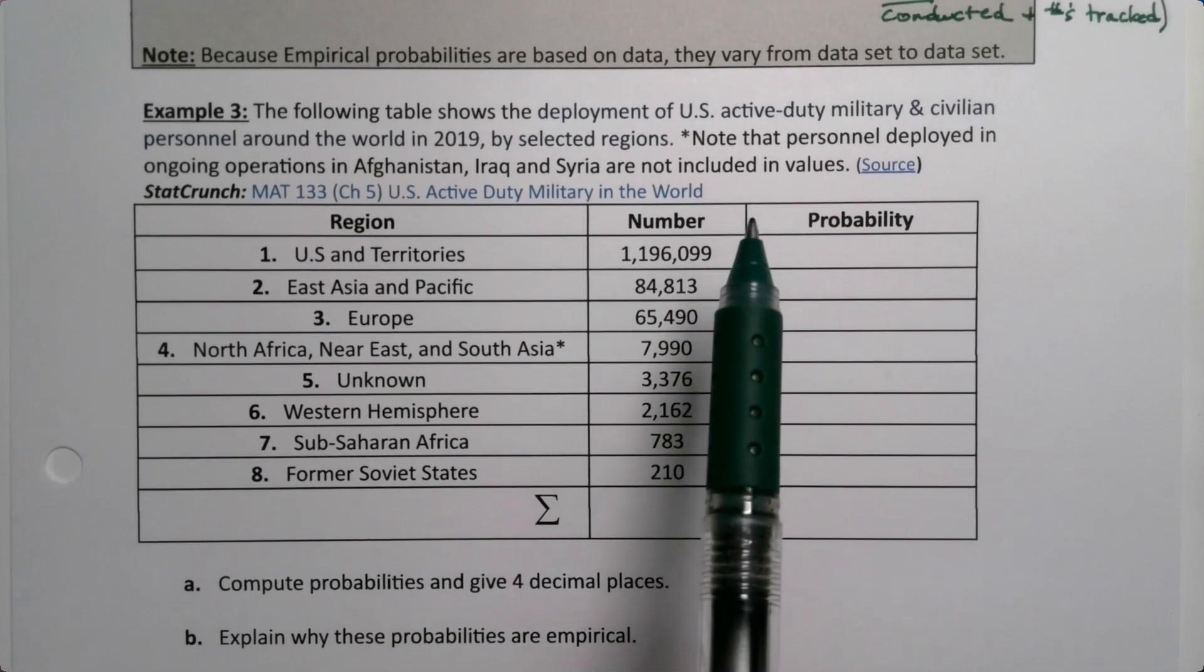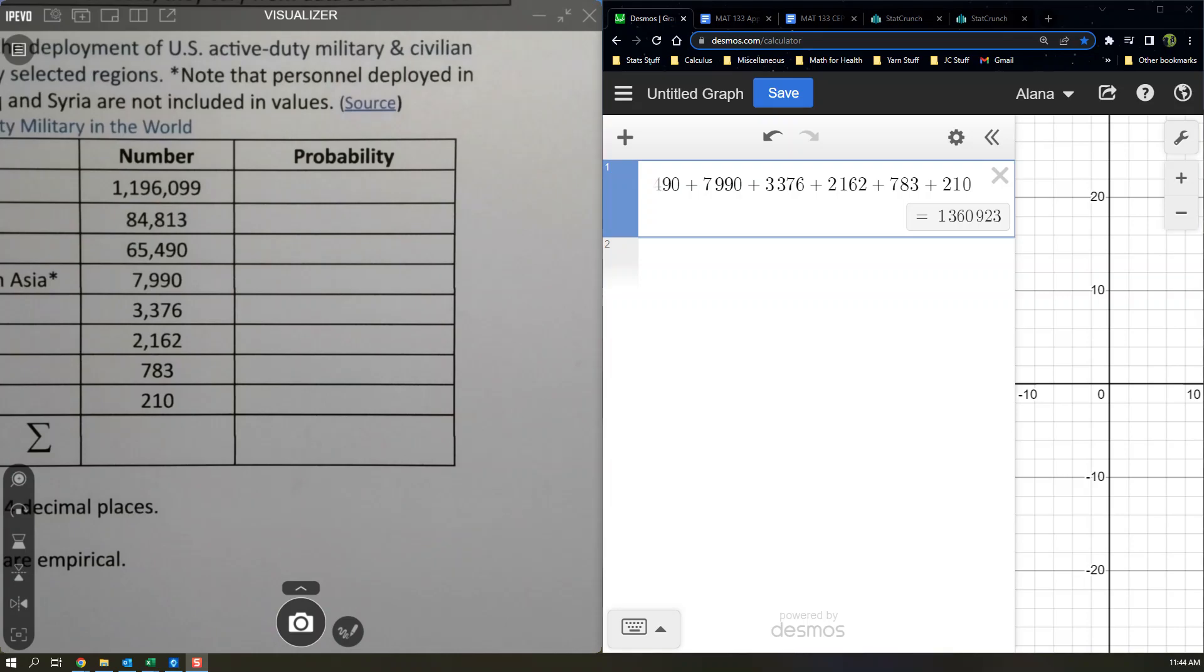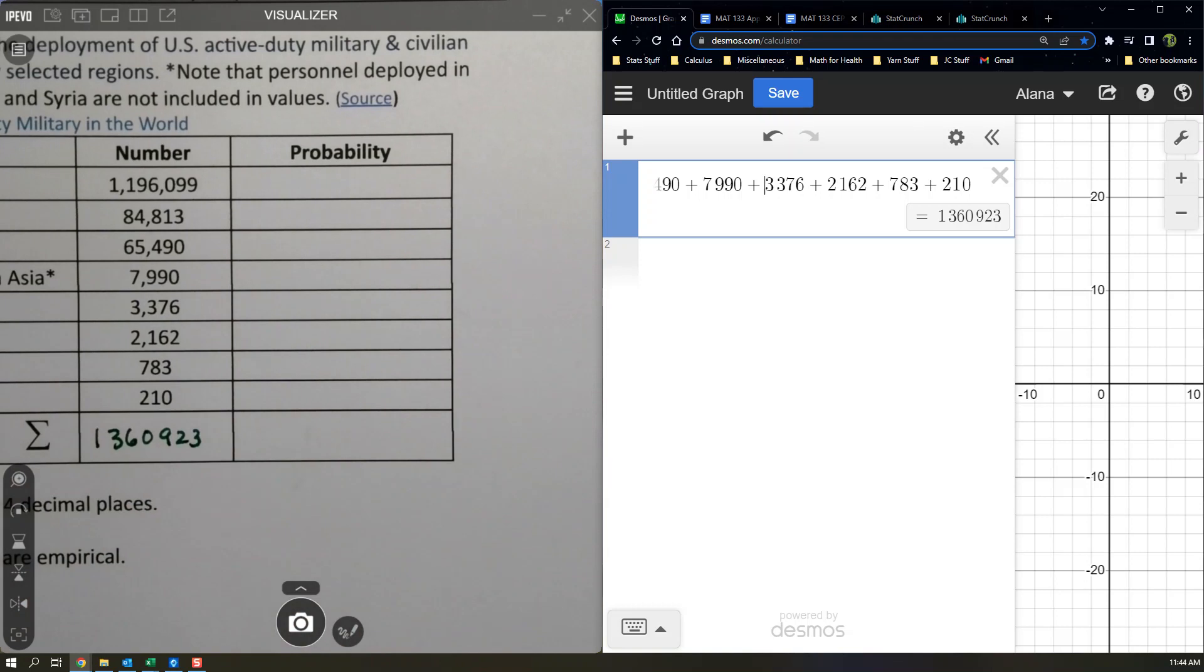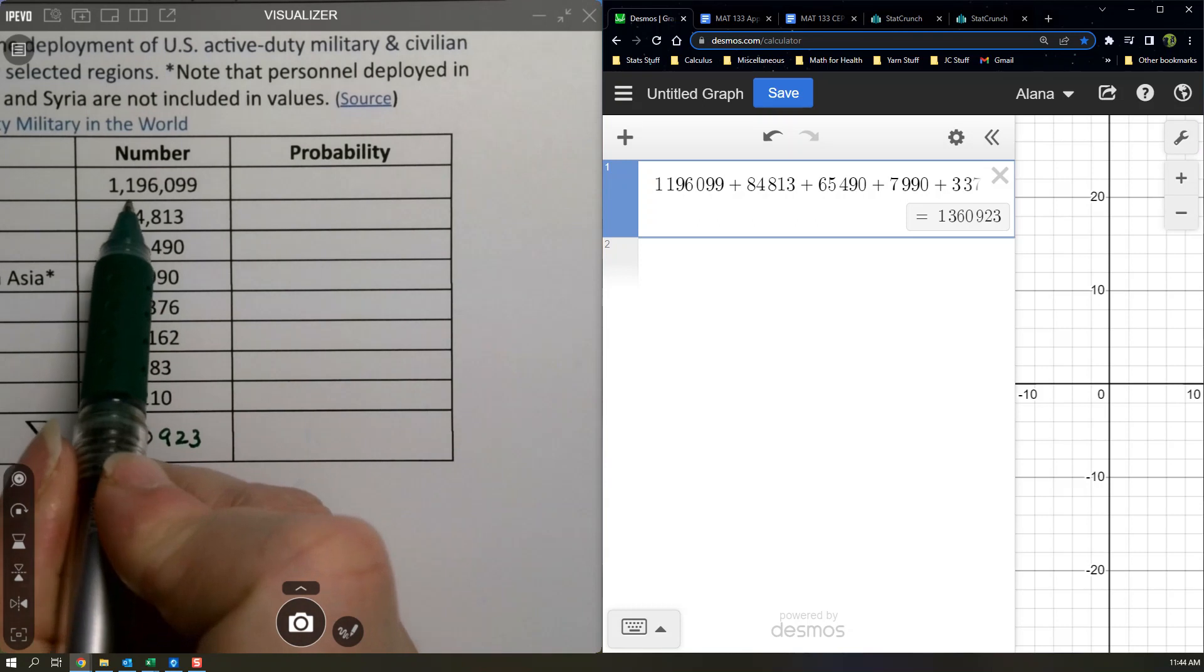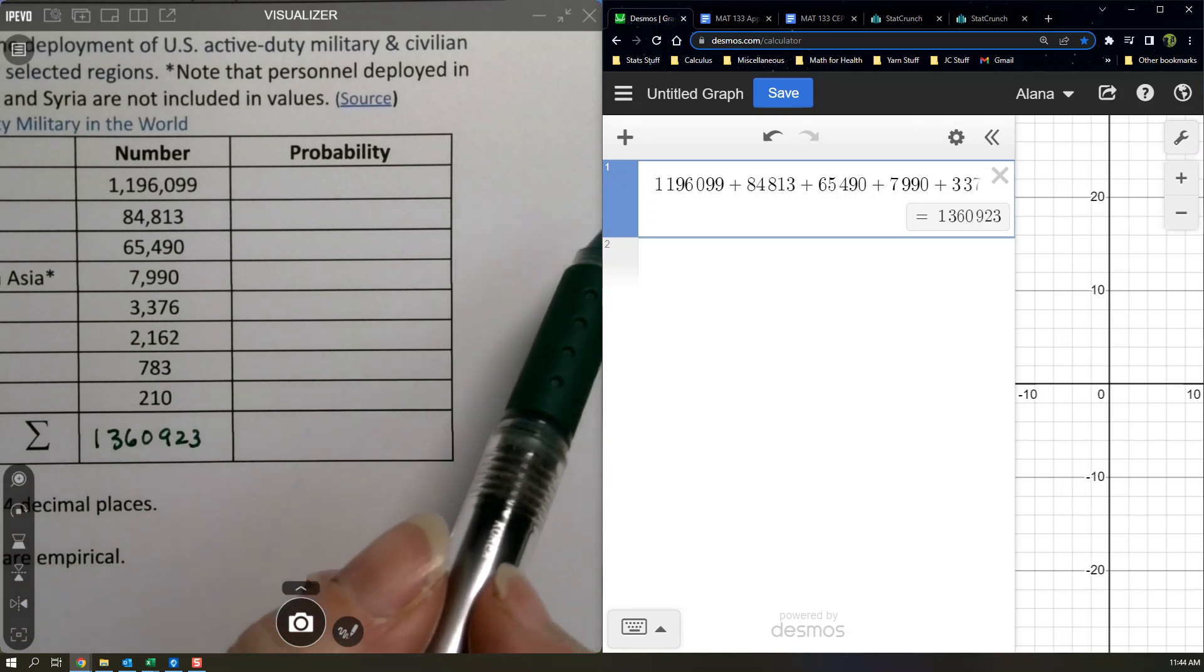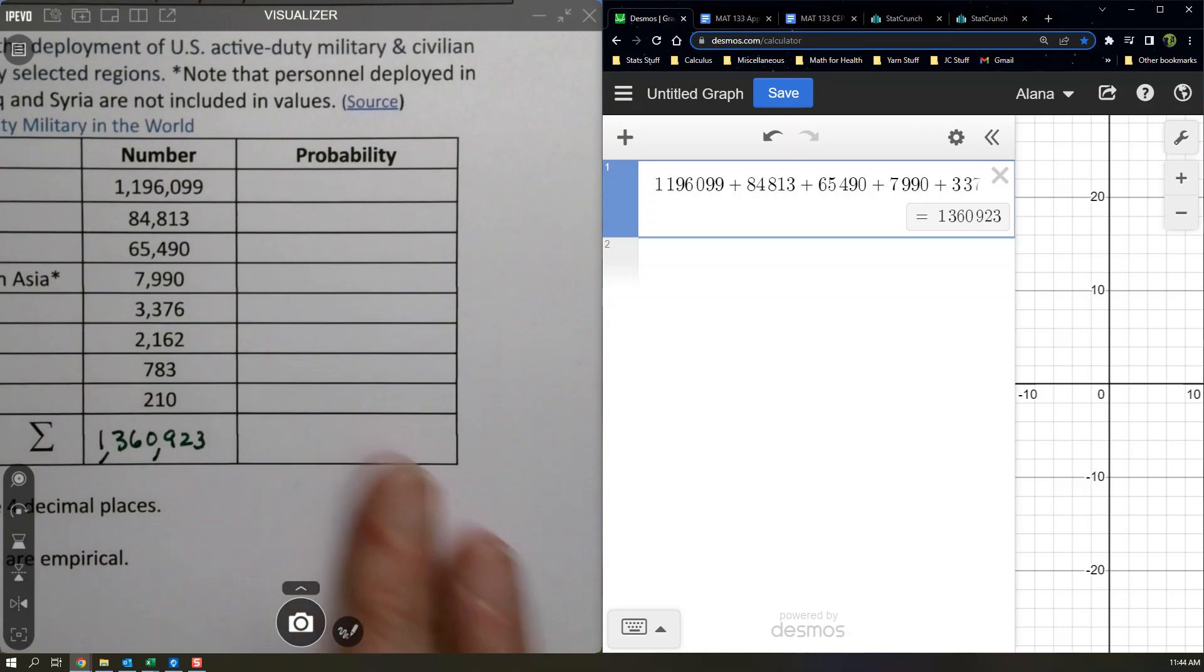The first thing we have to do is find the sum. Let me type those numbers into Desmos. I get a total of 1,360,923. Now I will warn you when you type large numbers into Desmos you cannot put the commas in. The commas are a notation so we can keep it straight, but Desmos will not know what you're doing. So you have to type it with no commas - it's one million three hundred sixty thousand nine hundred and twenty three.